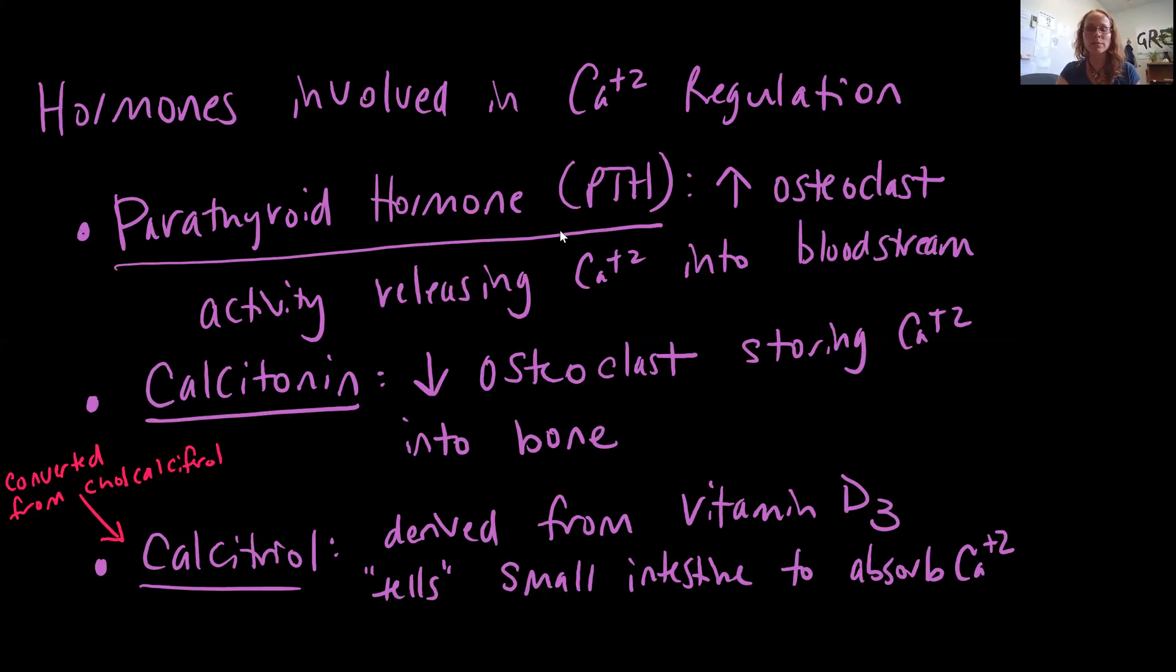And then calcitriol is going to help the parathyroid hormone. The calcitriol is converted from colcalciferol, which is the other name for vitamin D3. Remember you're getting vitamin D3 produced by a healthy integumentary system. Calcitriol is going to tell the small intestine cells to absorb calcium from your diet. So we've talked before that having a healthy integumentary system is important for a healthy skeleton, and here is that connection.